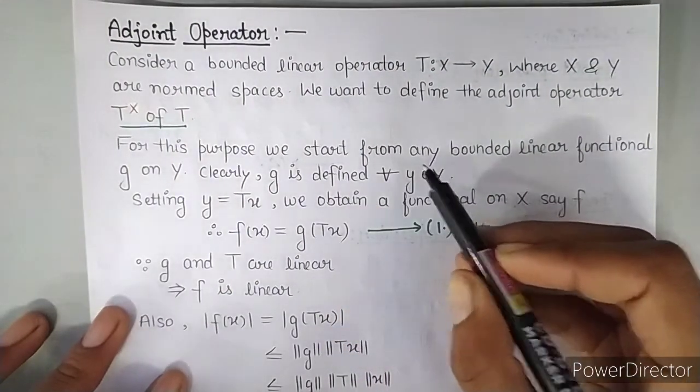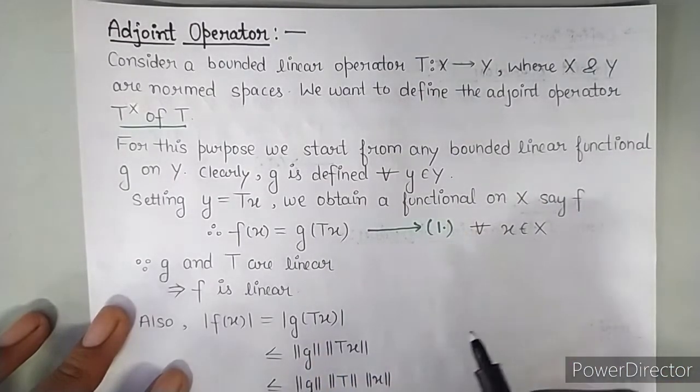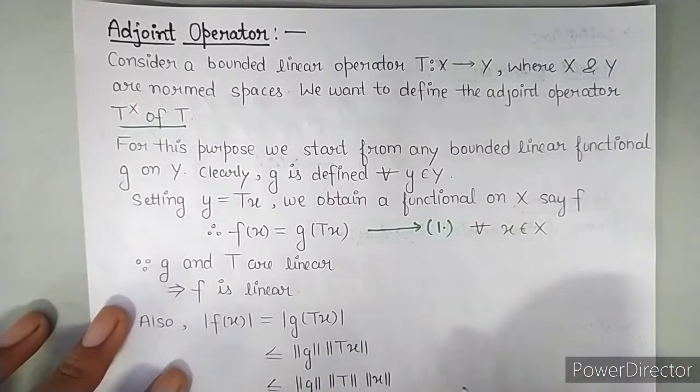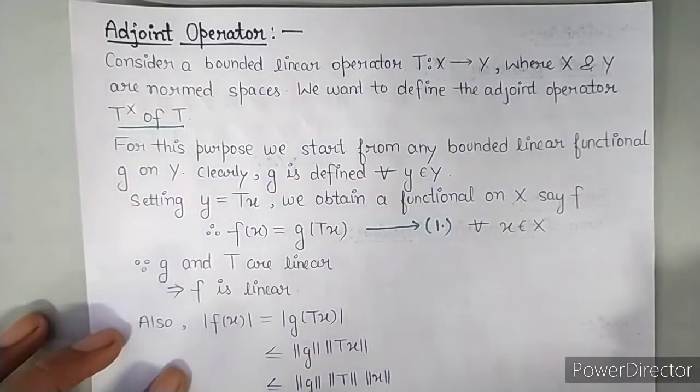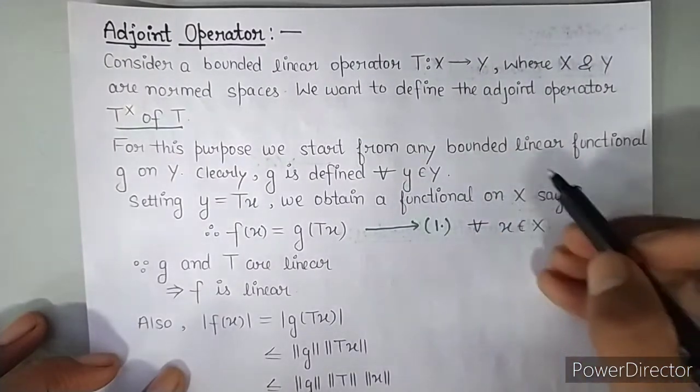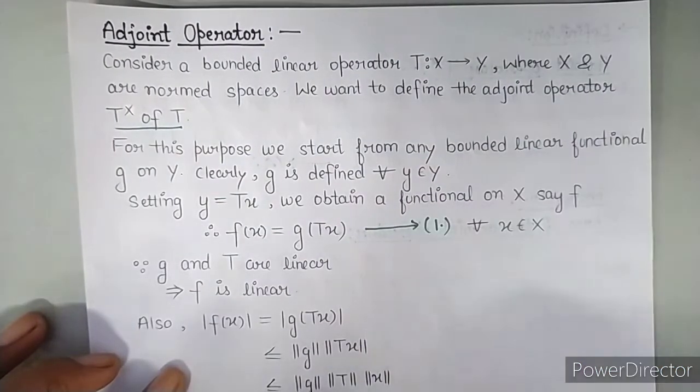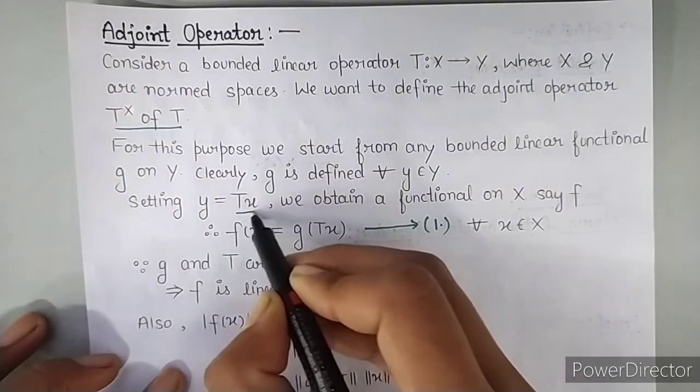For this purpose we start from any bounded linear functional G on Y. We will start from any bounded linear functional G. Clearly G is defined for all Y belonging to Y. Since Y is a norm space, for every element of Y we can define a bounded linear functional. So what did we set? Y to TX.